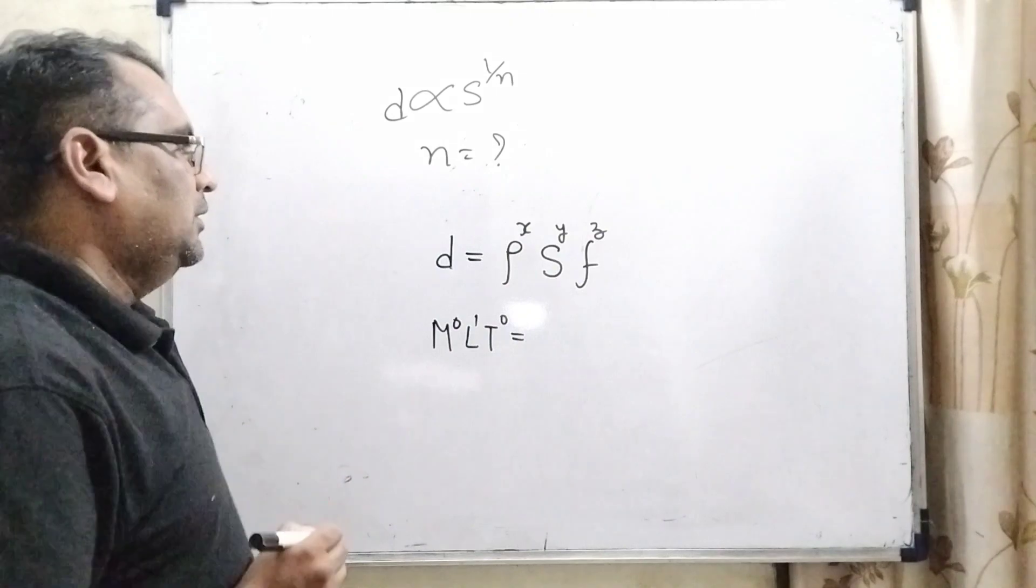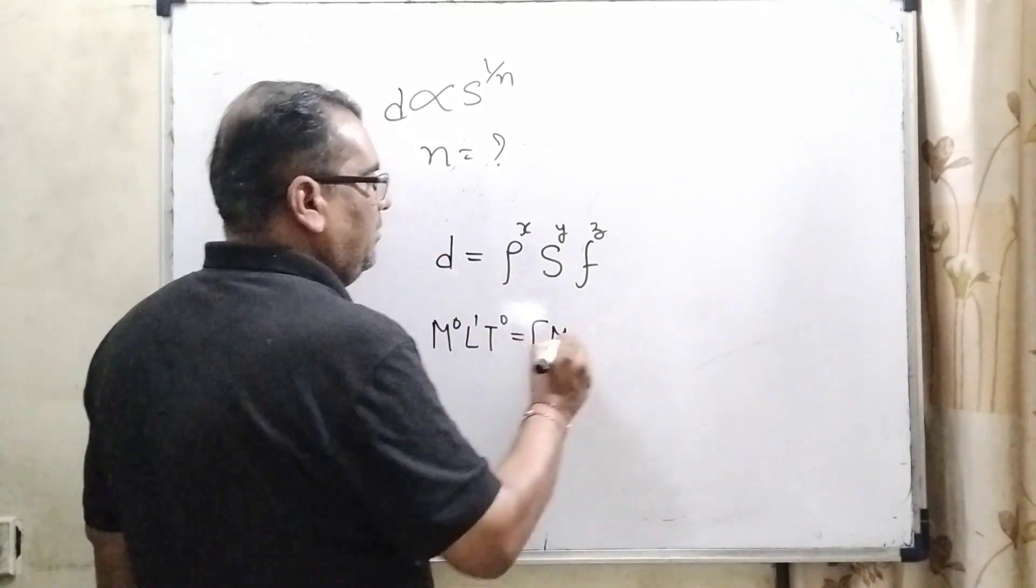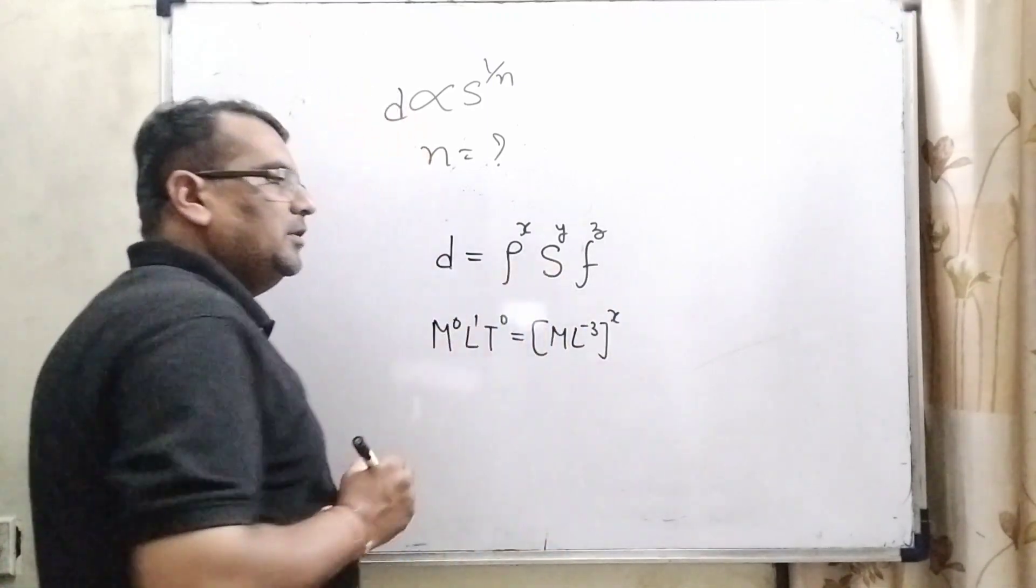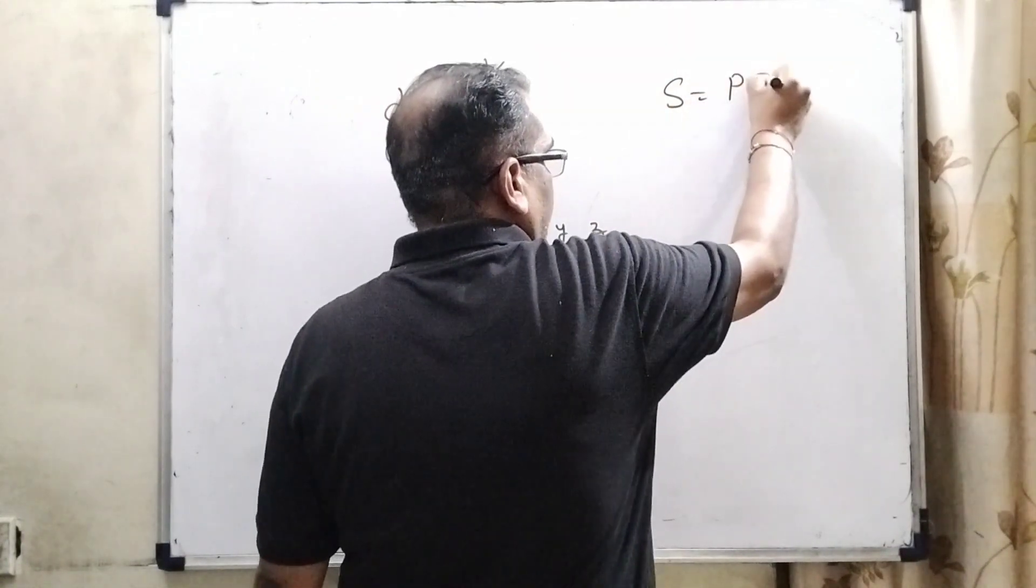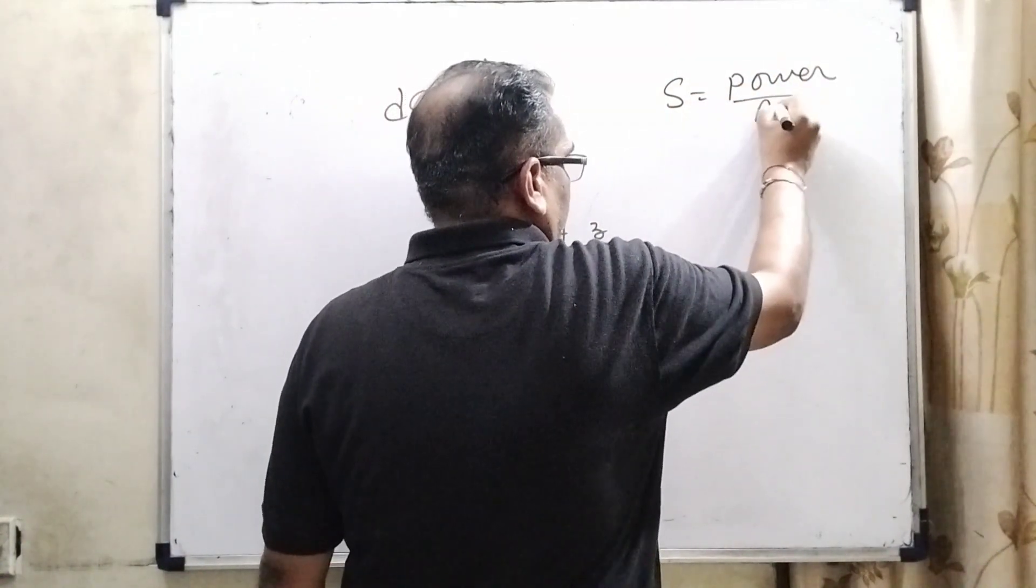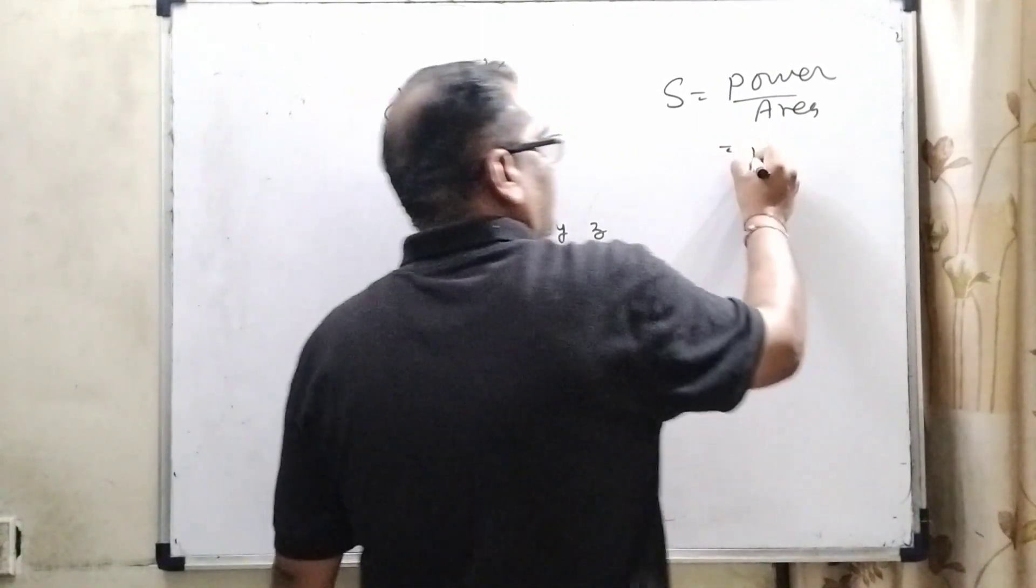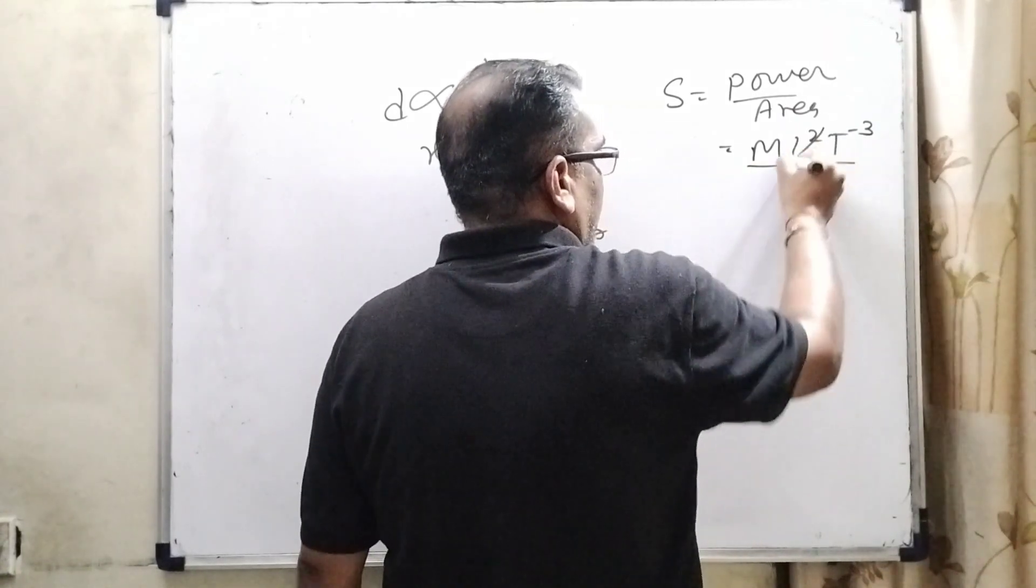Now the density, mass upon volume, means M L^-3 raised to power x. The formula S is given. Fog intensity is given as power upon area. What is the dimension formula of power? M L² T^-3, and area is L². So M T^-3.